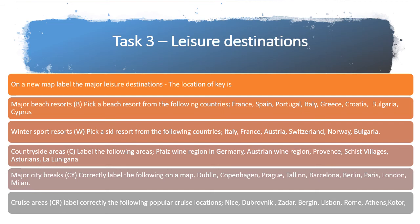Areas that are very popular for cruises include Nice, Dubrovnik, Zadar, Bergen, Lisbon, Rome, Athens, and Qatar. Find where those are in Europe and correctly place them on the map. Make sure you're using the correct keys: put B for beach resorts, W for winter resorts, C for countryside areas, CY for city breaks, and CR for cruise areas.